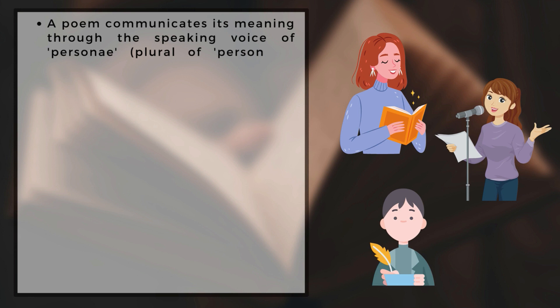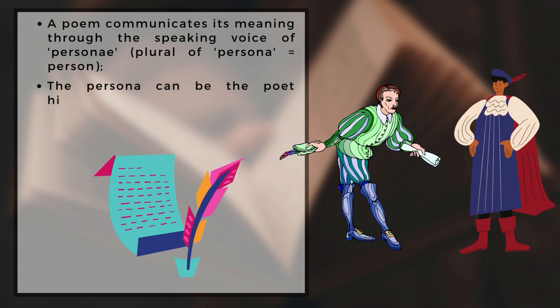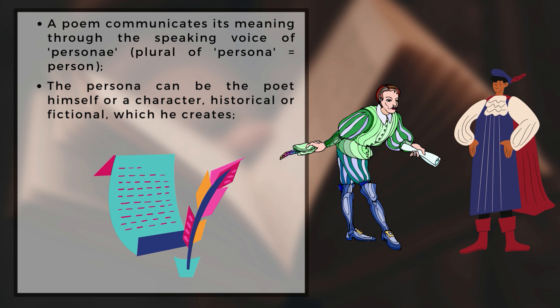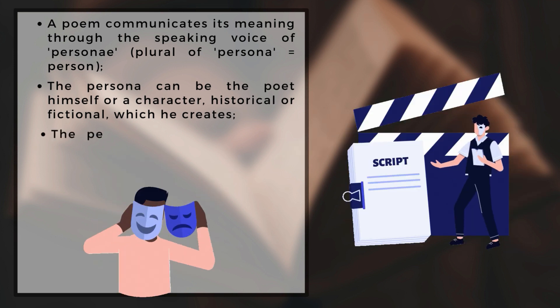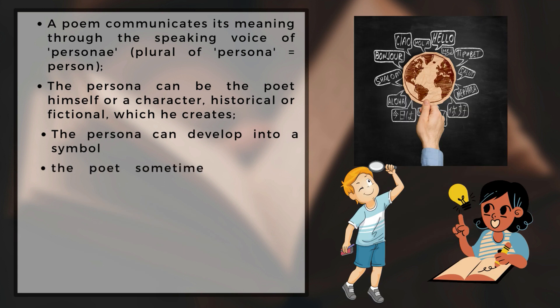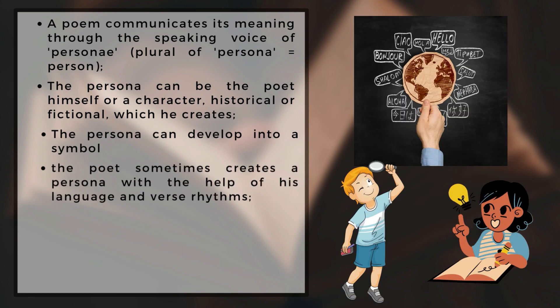We will also understand through whose voice a poem is articulated. The learning outcome at the end of this module is that you will learn that a poem communicates its meanings through the speaking voice of personae. You will also understand that the persona can be the poet himself, or a character — historical or fictional — which the poet creates.